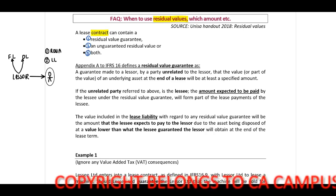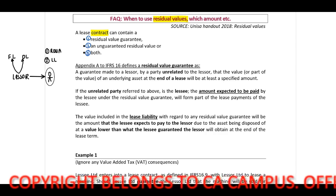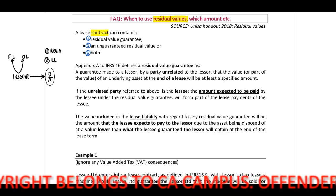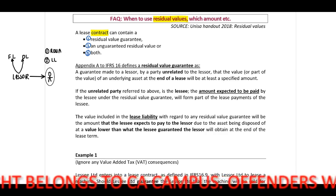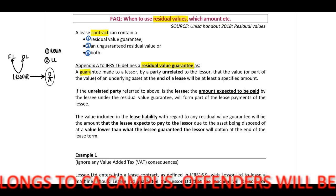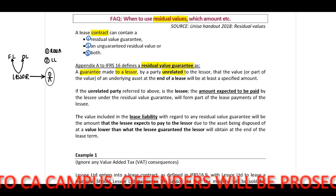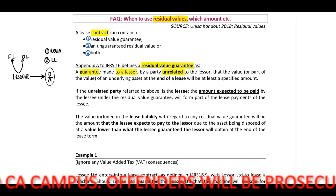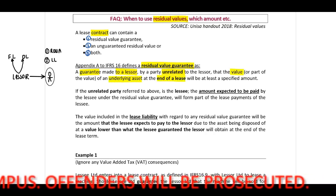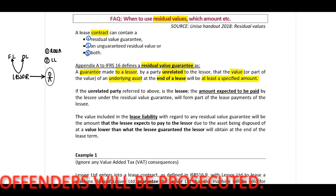We need to work through the principles, then I'll explain them, and we will look at a basic scenario. In terms of Appendix A, our residual value guarantees will be a guarantee made to a lessor by a party unrelated to the lessor that the value of an underlying asset at the end of the lease will be at least a specified amount.